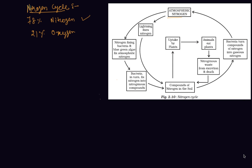As you all know, our atmosphere contains 78% Nitrogen and 21% Oxygen. Nitrogen is one of the essential constituents of all living organisms, as part of proteins, chlorophyll, nucleic acids, and vitamins.